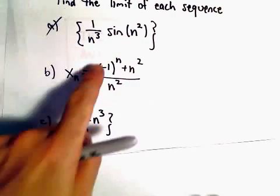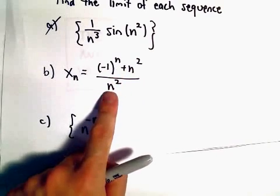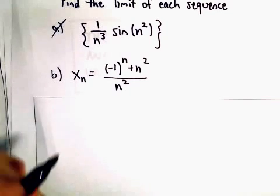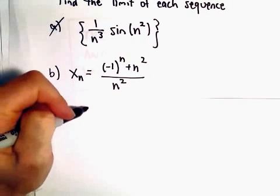So for large values of n, the numerator and the denominator are almost going to be exactly the same value, which makes me think this limit should equal 0. To justify this, we're going to use the absolute value theorem.